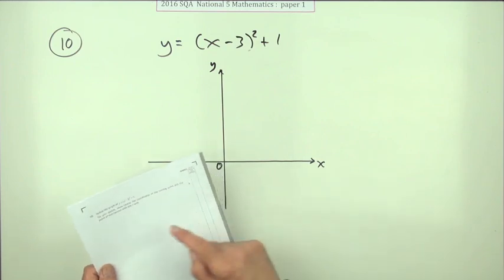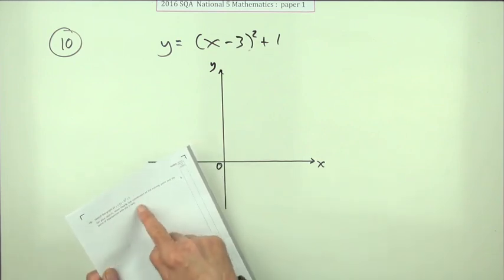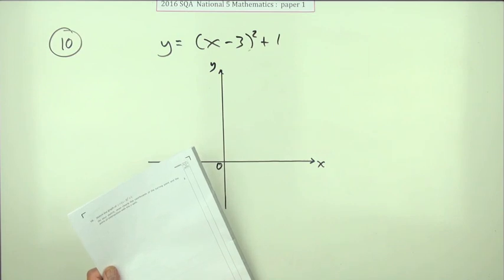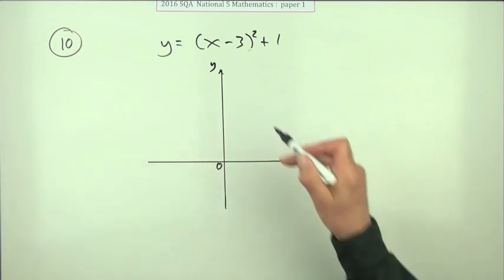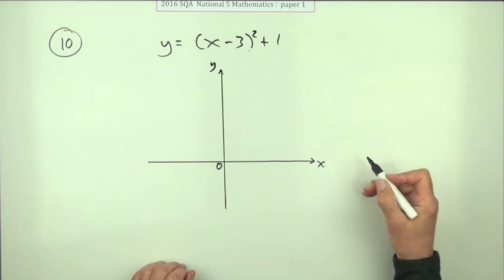But it's given you an indication here that it's only actually going to intersect the y-axis for three marks. Because that's the first thing you'd pick out from this - where is its turning point?